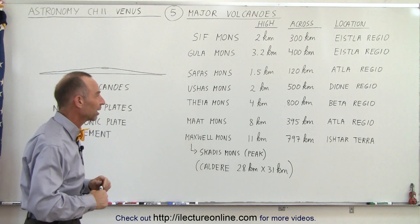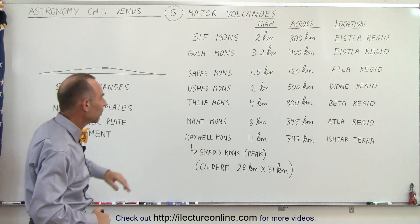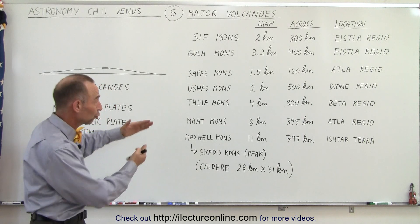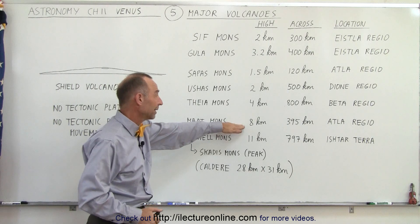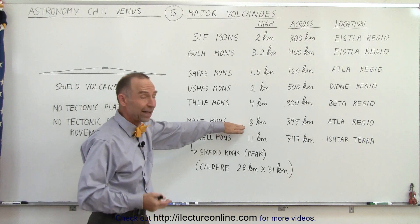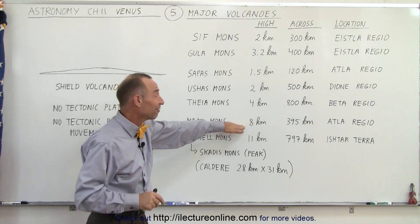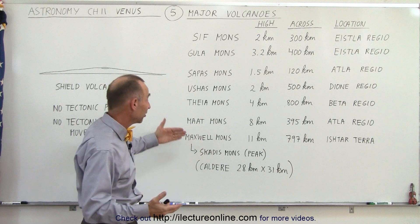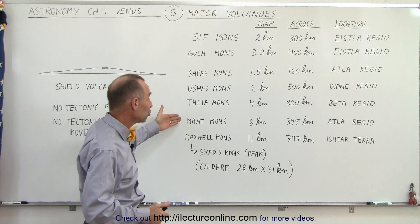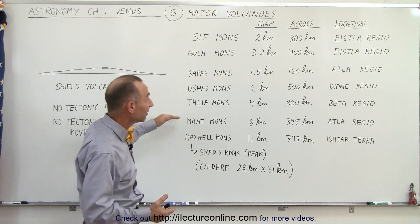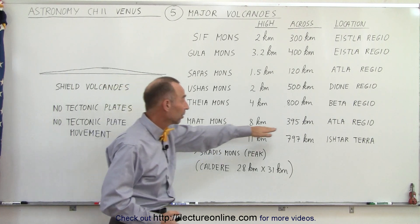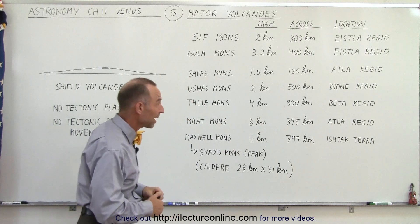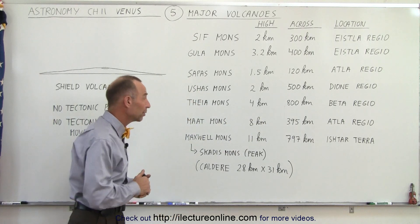We have Maat Mons — the picture that we just showed you — which is a very tall mountain at 8 kilometers high, that's about 5 miles or 25,000 feet. And it measures 400 kilometers across, which is about 250 miles, located in the Atla region.